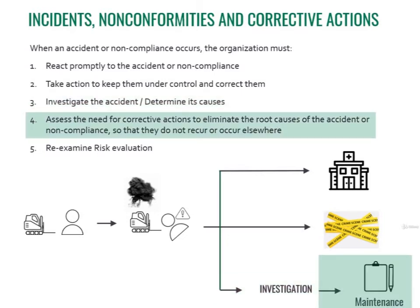Step 4 consists in using the results of the investigation to find the proper corrective actions that eliminate the root causes of the accident so that they do not reoccur or occur elsewhere. In our example, the investigation found out that the company has no maintenance plan — it does maintenance only when there is a serious malfunction. So the corrective action could consist in doing preventative maintenance managed through a maintenance plan.